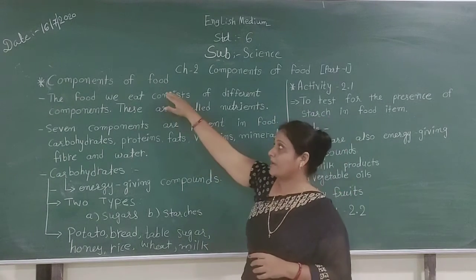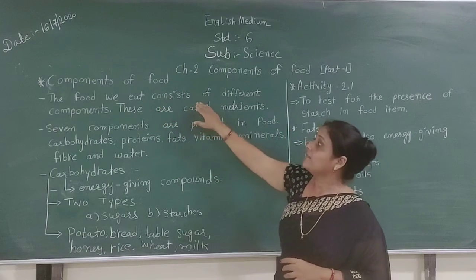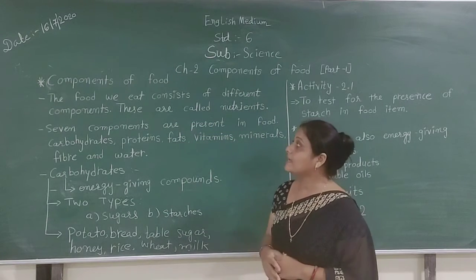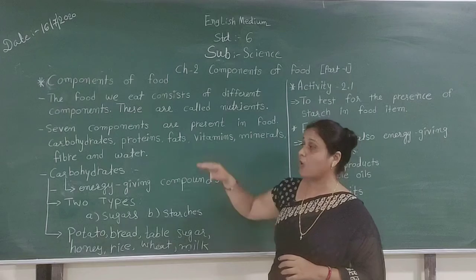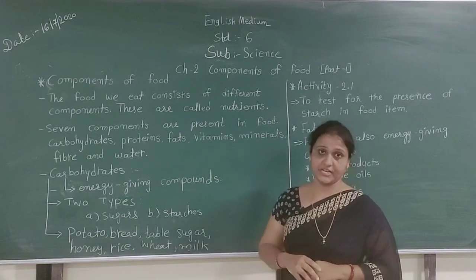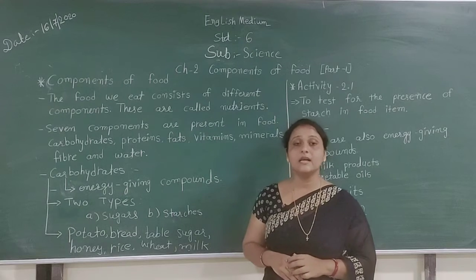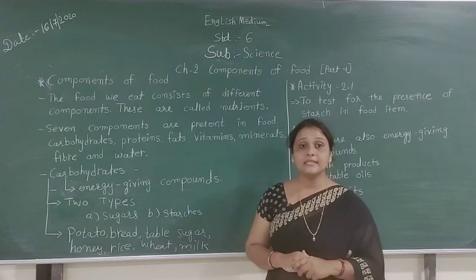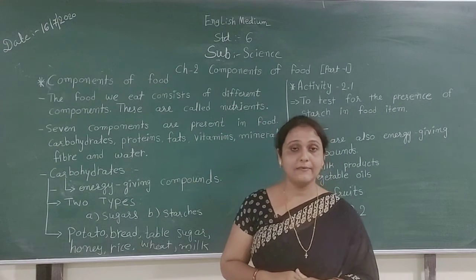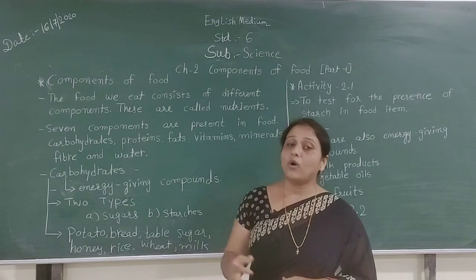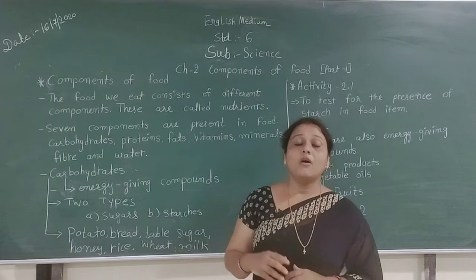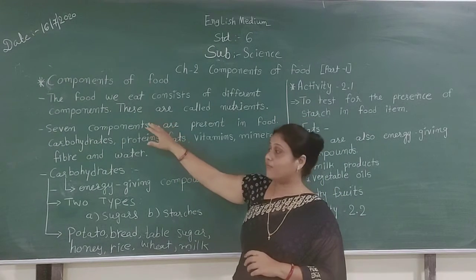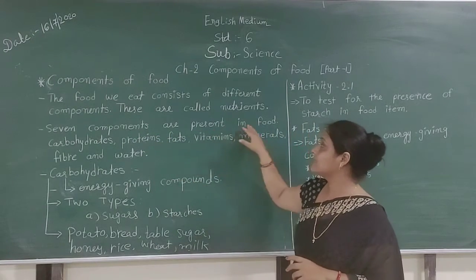The food we eat consists of different components. These components are called nutrients. We always need different types of nutrients in our life for doing many types of activities and also to protect ourselves from many types of diseases.